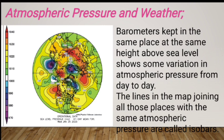The lines on a map joining all those places with the same atmospheric pressure are called isobars. Isobars represent lines of equal pressure on weather maps.